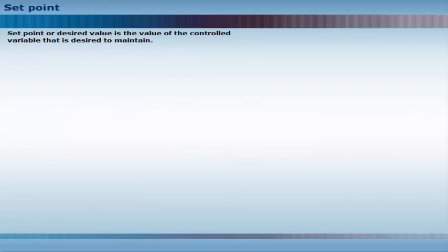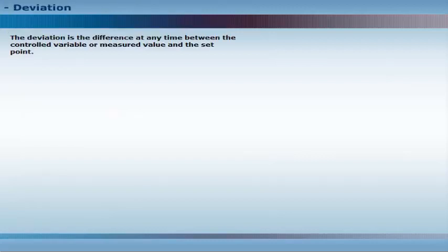The set point or desired value is the value of the controlled variable that is desired to maintain. The deviation is the difference at any time between the controlled variable or measured value and the set point.